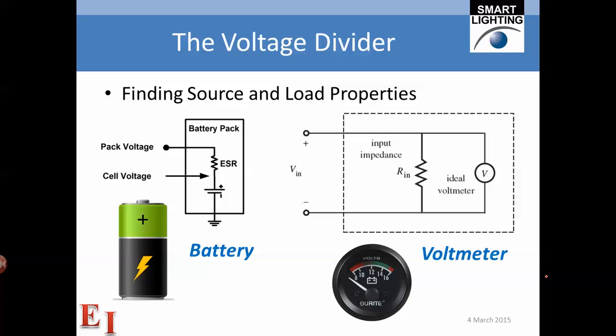If we know that our source has an internal resistance, here is the model of our source where there is an ideal voltage source and an equivalent series resistance. All standard batteries have an internal resistance because of the chemistry that is used to create the cell.